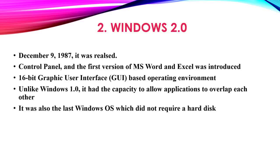Two: Windows 2.0. Released on 9th December 1987. Control panel and the first version of MS Word and Excel were introduced. 16-bit graphical user interface. GUI-based operating environment. Unlike Windows 1.0, it had the capacity to allow applications to overlap each other. It was also the last Windows OS which did not require a hard disk.